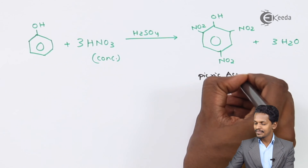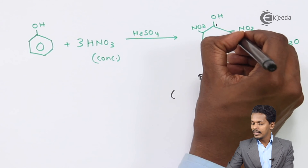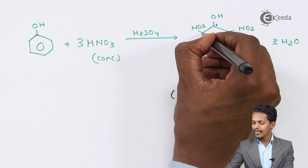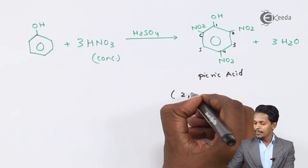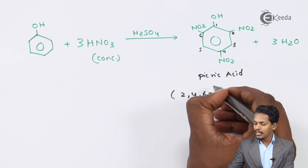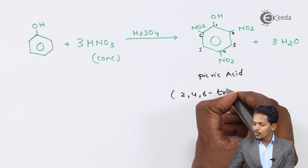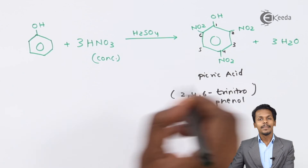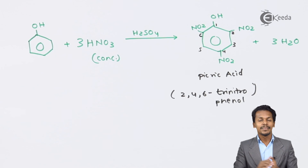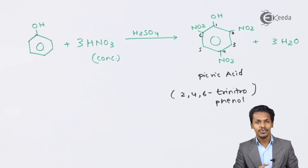The product is picric acid. Numbering the carbons one through six, we can see that at positions 2, 4, and 6, three nitro groups are attached. Therefore the name is 2,4,6-trinitrophenol, which is nothing but picric acid. Thank you friends for watching this video — I hope you have learned about this reaction. Don't forget to subscribe to the channel. Thank you so much.